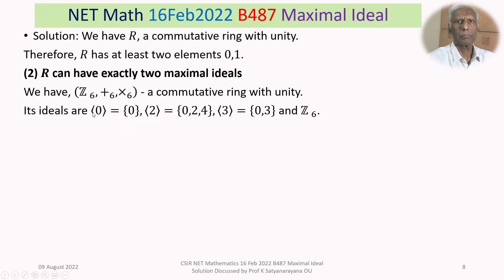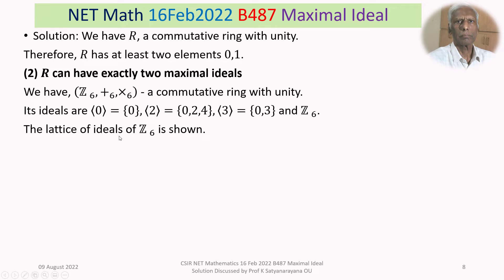Its ideals are: the zero ideal {0}, the whole ring Z6, the ideal generated by 2 which consists of {0, 2, 4}, and the ideal generated by 3 which consists of {0, 3}. So these are the four ideals that Z6 admits.